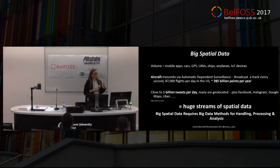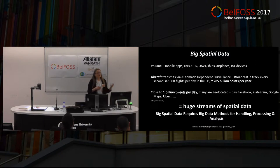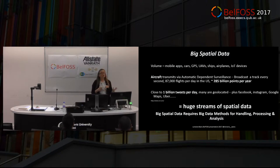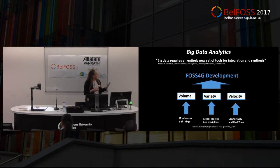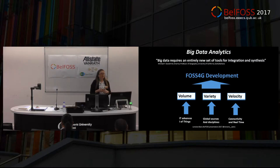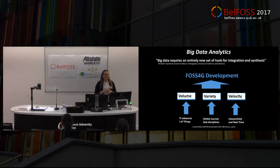Big spatial data sets have been increasing in volume from mobile applications, cars, GPS, UAVs, ships, airplanes, and social data sets from Twitter, Facebook, Instagram, and Uber — all of those movement patterns are available, equalling huge streams of spatial data. This huge amount of data requires bigger and more appropriate methods for handling, processing, and drawing out value from it. This increase in volume has led to a thriving development of FOSS4G, allowing us to develop new and innovative methods and an entirely new set of tools for integration and synthesis.